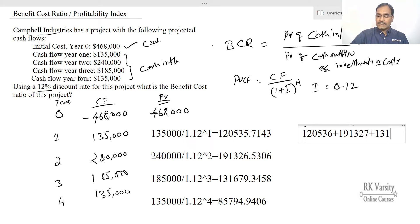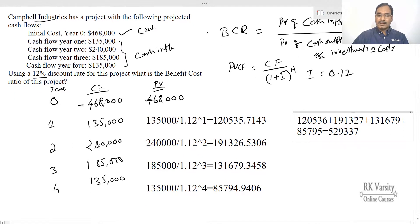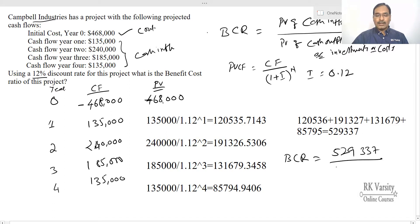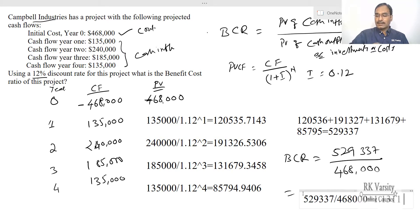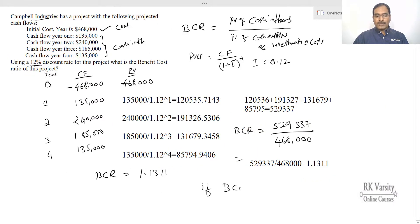The sum of the present values of the benefits is: $120,536 + $191,327 + $131,679 + $85,795 = $529,337. The benefit-cost ratio equals $529,337 divided by the present value of cash outflows, $468,000, which gives 1.1311.